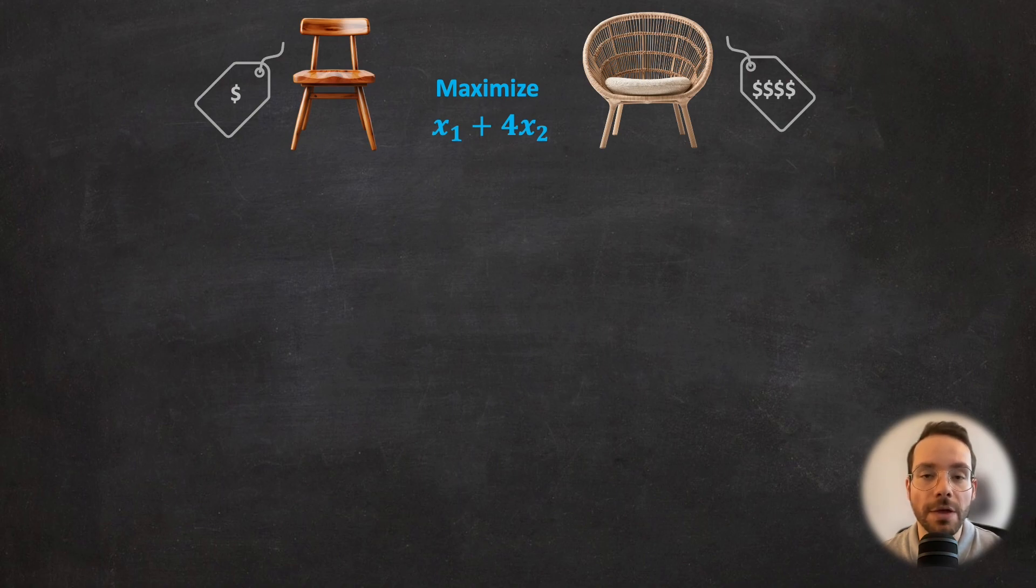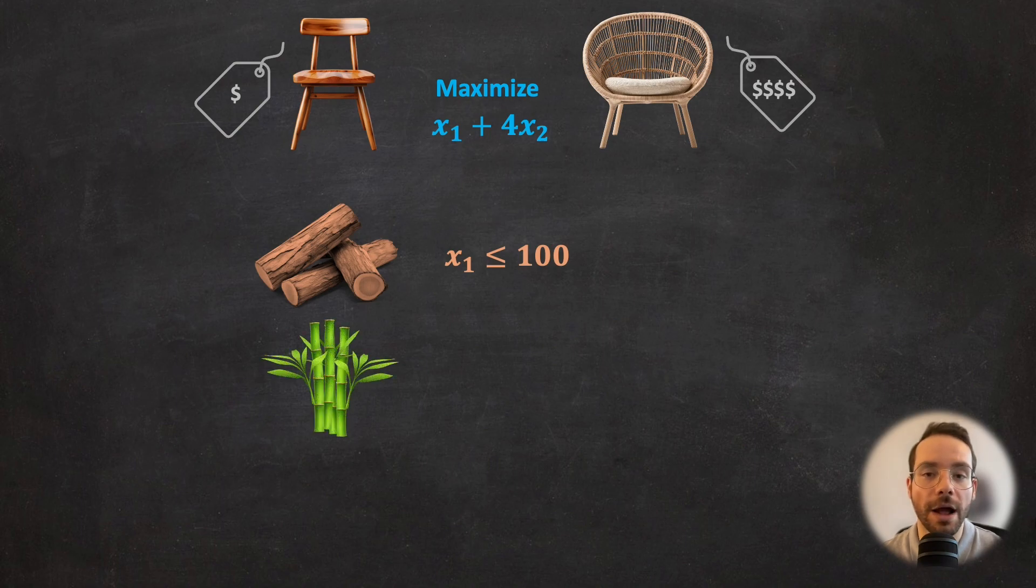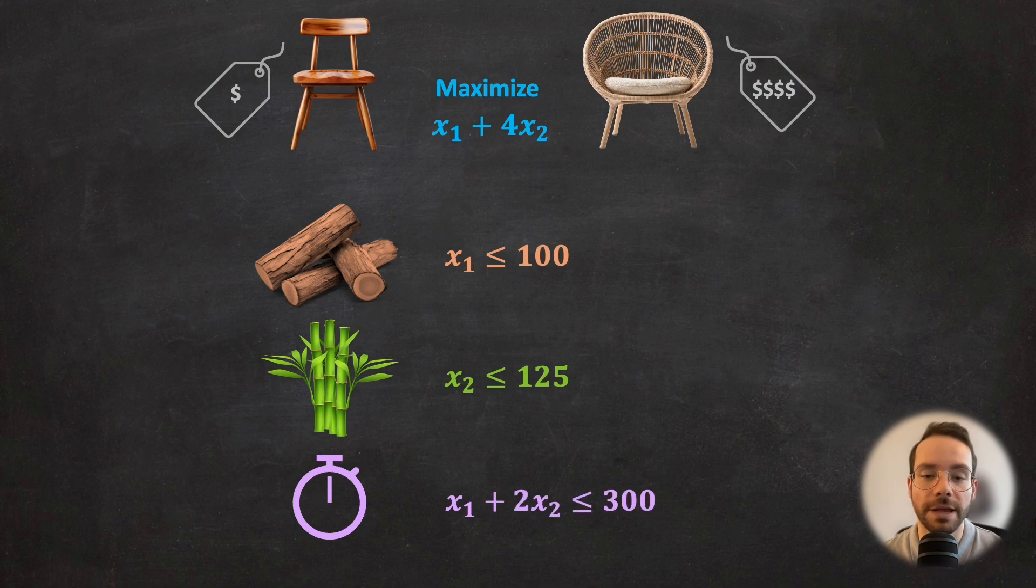Now here's the catch. You have just enough walnut wood to produce 100 indoor chairs and just enough bamboo to create 125 patio chairs. Each indoor chair takes one hour to make while crafting a patio chair requires two hours. And time is money. In this scenario, we have a total of 300 man hours available for production. So that's going to give us x1 plus 2x2 less than or equal to 300 hours.